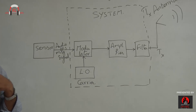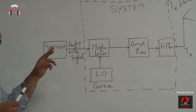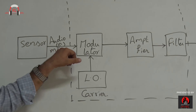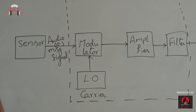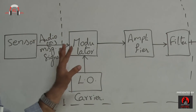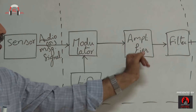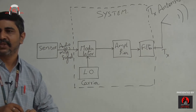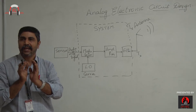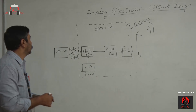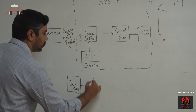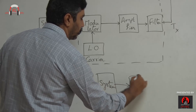A sensor — typically a condenser mic — senses the signal. That audio signal or message signal is to be modulated. To modulate that signal I need some oscillator, a local oscillator which provides the carrier signal, and then the modulated signal will be amplified, filtered, and transmitted.